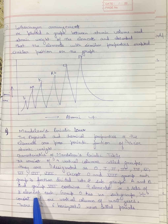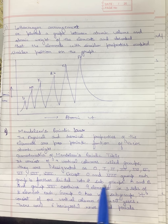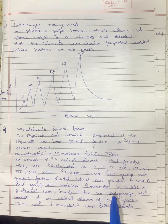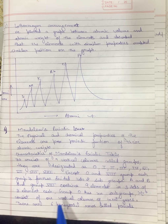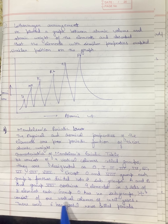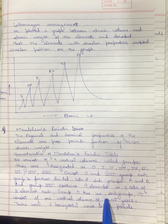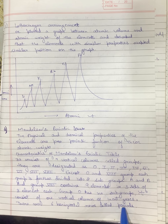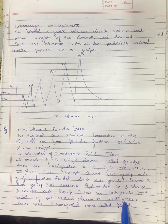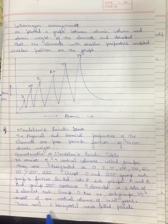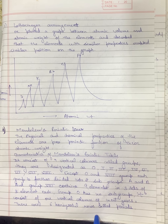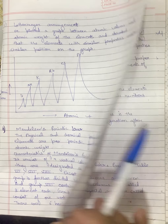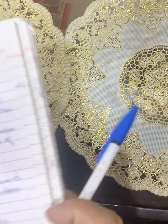Mendeleev designated his vertical columns as groups using Roman numerals: zero, one, two, three, four, five, six, seven, and eight. Except for groups zero and eight, he divided all other groups into two subgroups: A and B. Group eight elements were placed in sets of three. There were also six horizontal rows called periods in Mendeleev's periodic table, arranged according to atomic mass.